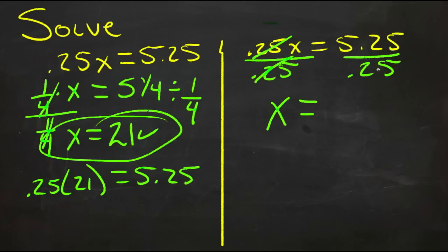5 and 1 quarter divided by 1 quarter is the same as 5 and 1 quarter times 4, so we get 21, and we already know that answer is correct because we checked it before.